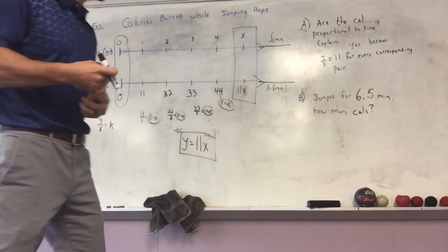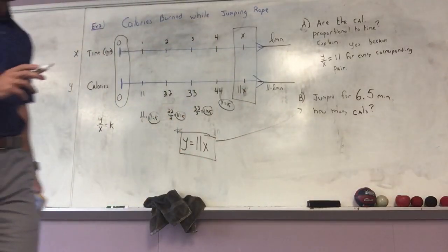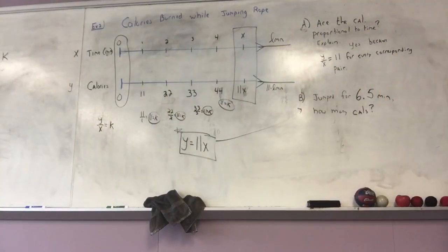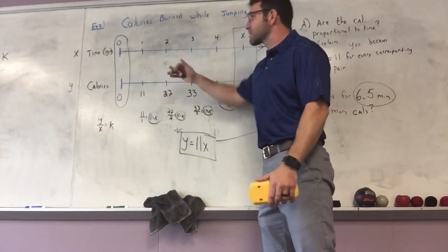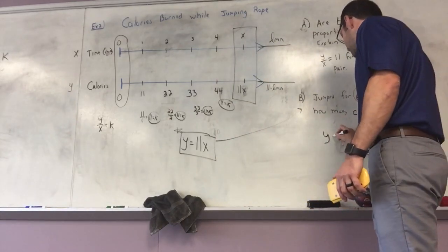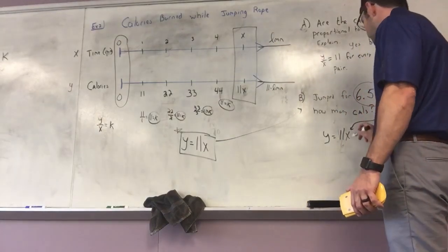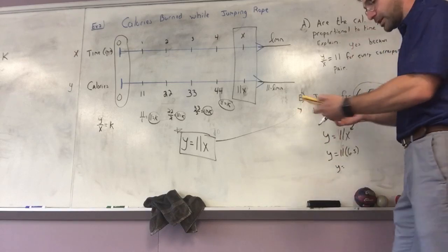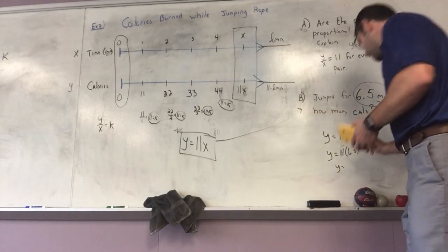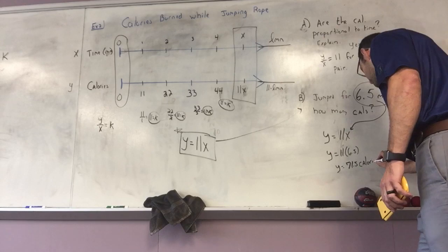Now for the second question — jumped for 6.5 minutes, how many calories? This is why we have the equation y = 11x. Time is x and calories are y. Substituting in: y equals 11 multiplied by 6.5. Using a calculator, 6.5 multiplied by 11 gives me 71.5. So jumping rope for 6.5 minutes burns 71.5 calories.